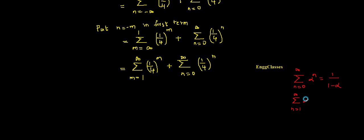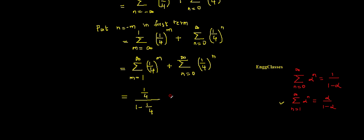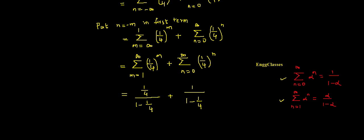The standard geometric series formulas are: the sum from n=0 to infinity of alpha to the power n equals 1/(1 − alpha), and the sum from n=1 to infinity of alpha to the power n equals alpha/(1 − alpha). Using these, the first term gives (1/4) divided by (1 − 1/4), and the second term gives 1 divided by (1 − 1/4).